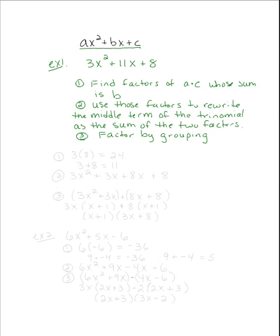Let us start with Step 1 using this example. We want to take a times c, so that is 3 times 8, which gives me 24. Now we want to find factors of 24 that when I add those two numbers I get the middle term, which is 11. In this case it turns out that 3 plus 8 equals 11 and 3 times 8 equals 24 — though it will not always work out that way, and we will do another example where you see that.